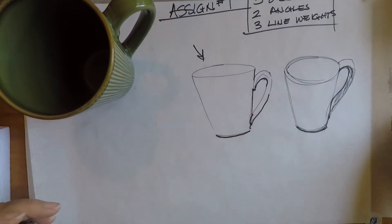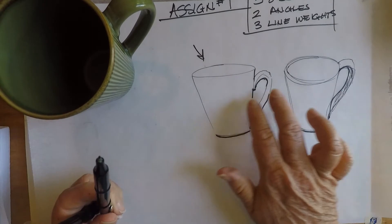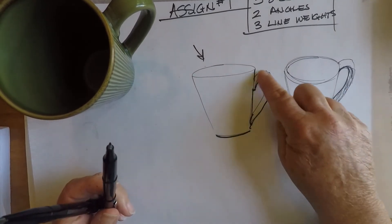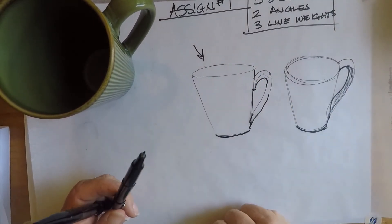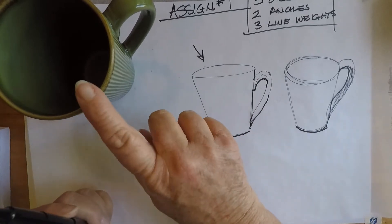So again, it doesn't really matter if the object itself is perfectly accurate. The goal is to try to achieve the three line weights. So we're just using this to practice line weights.